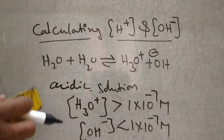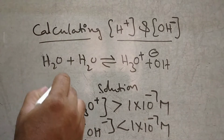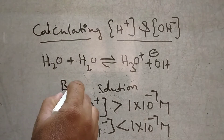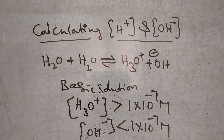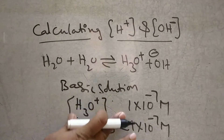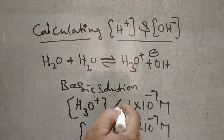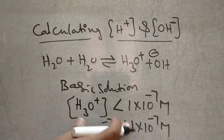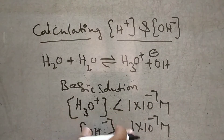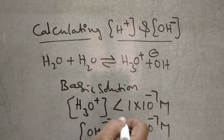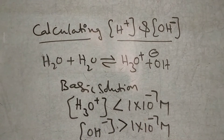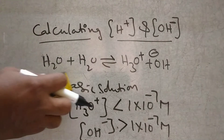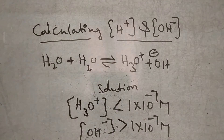Suppose if it is a basic or alkaline solution, the H3O plus ions, that is hydronium ions, are less than 1 into 10 to the power of minus 7 M. And here, OH minus ions are greater than 1 into 10 to the power of minus 7 M.